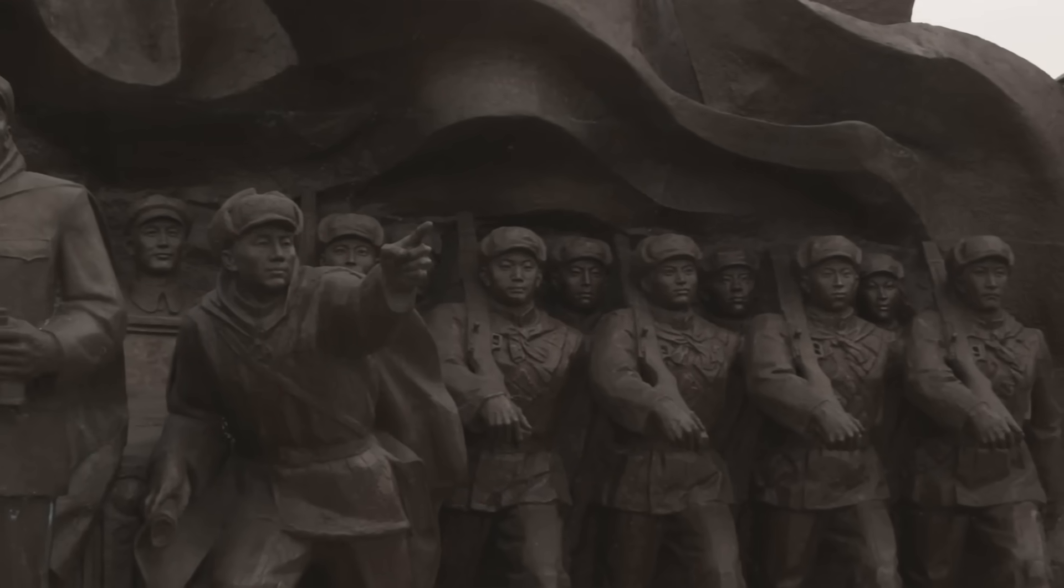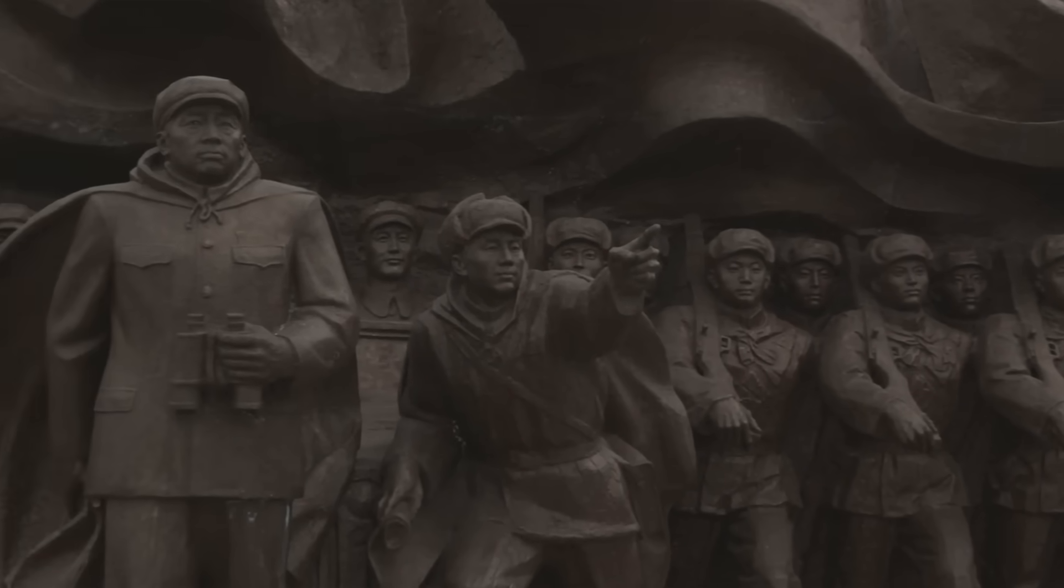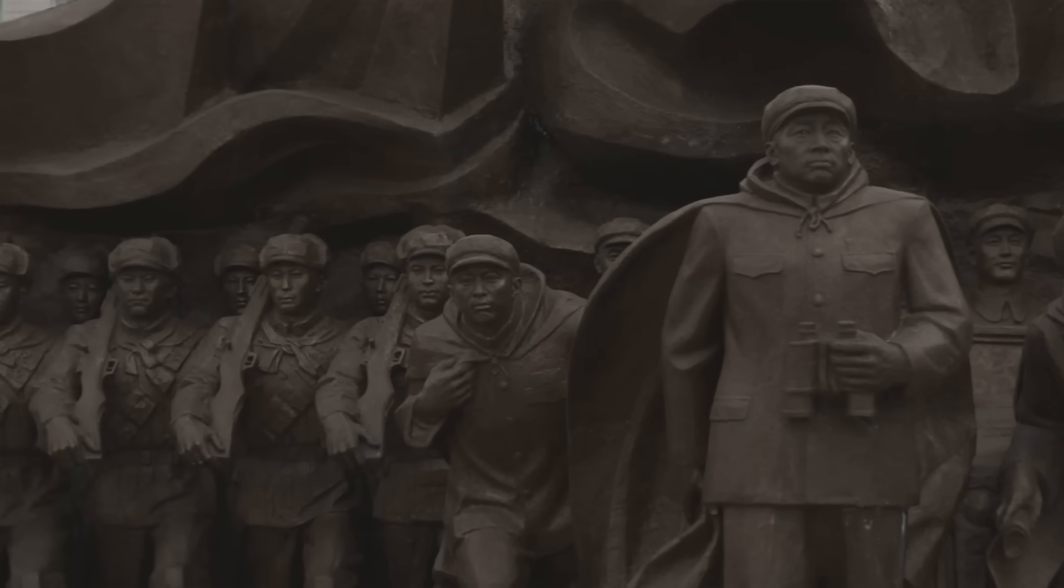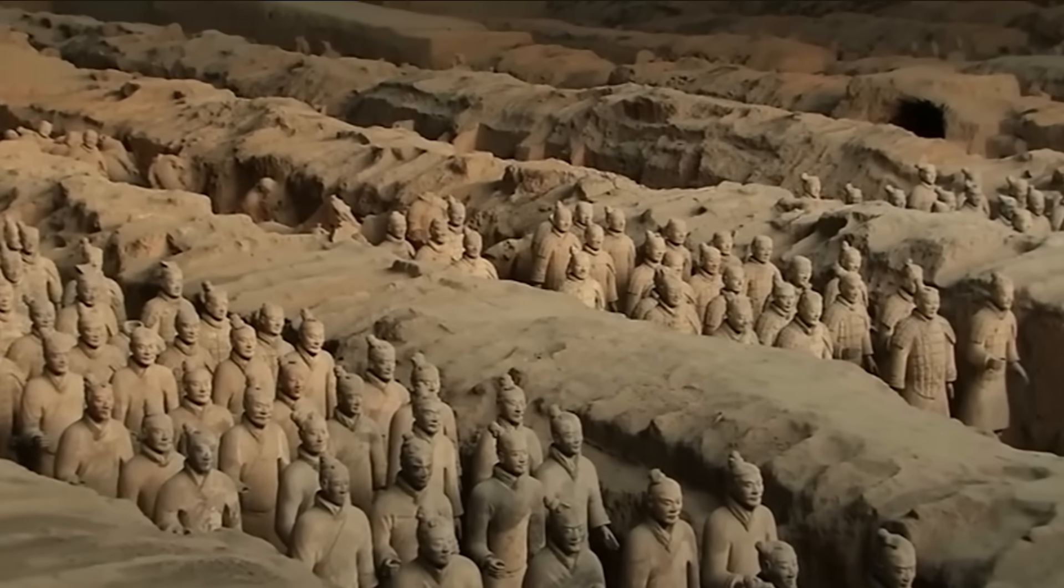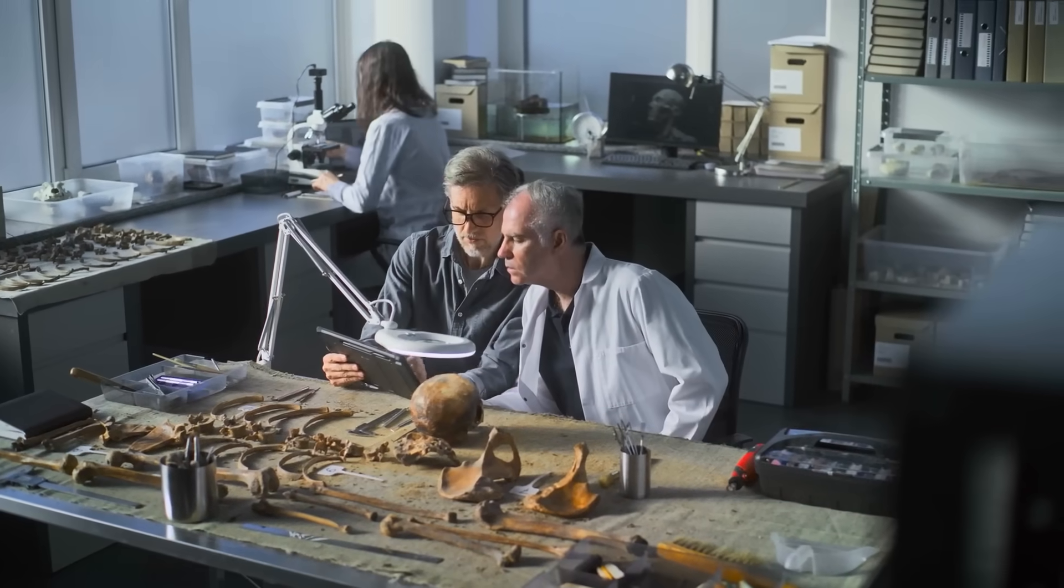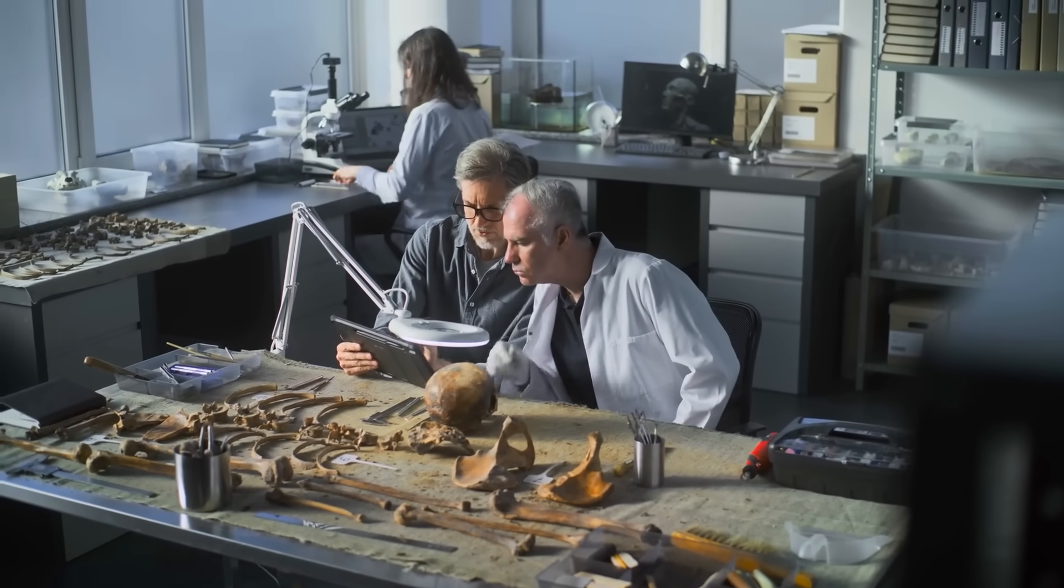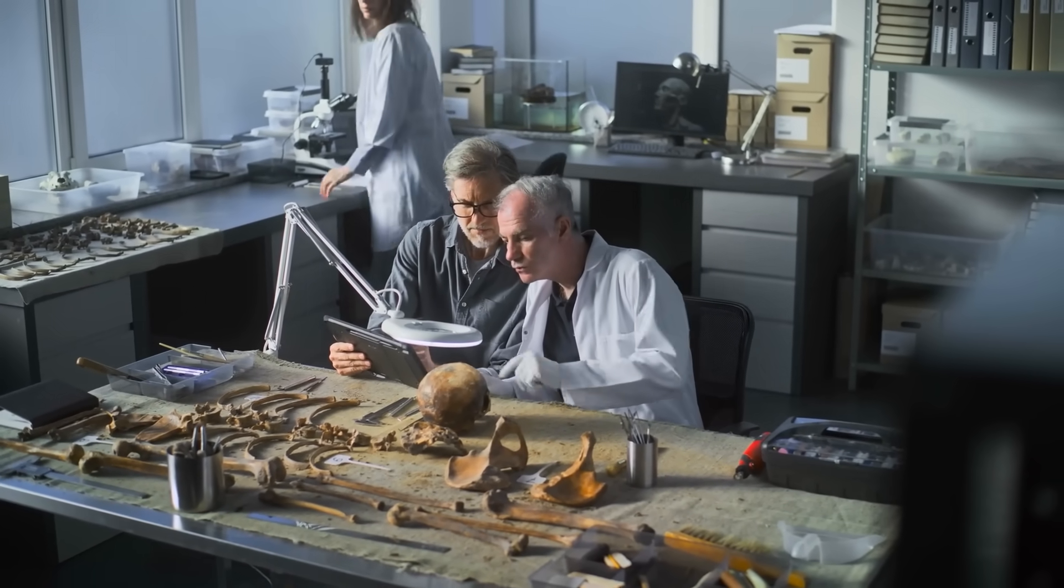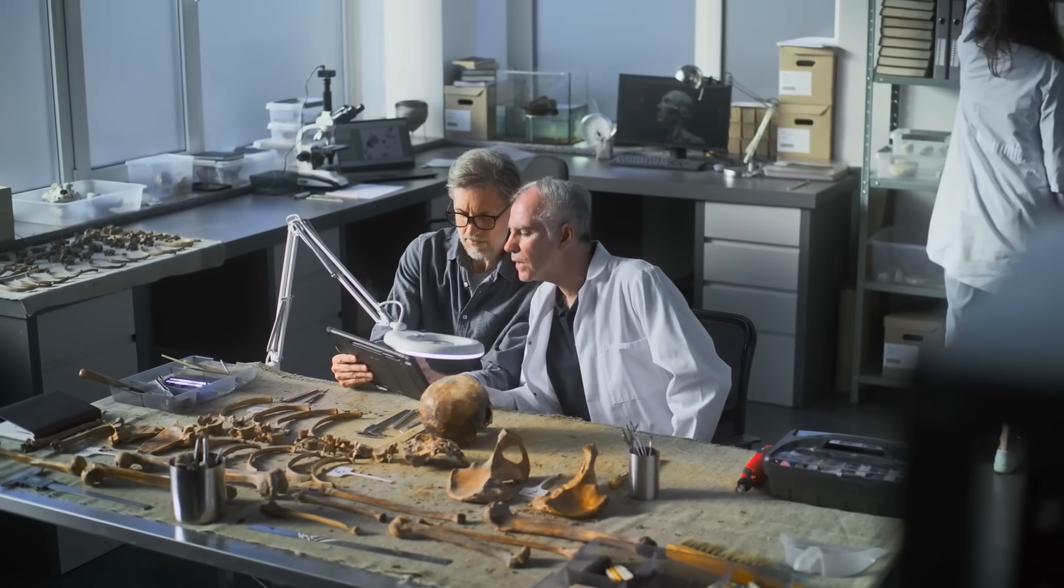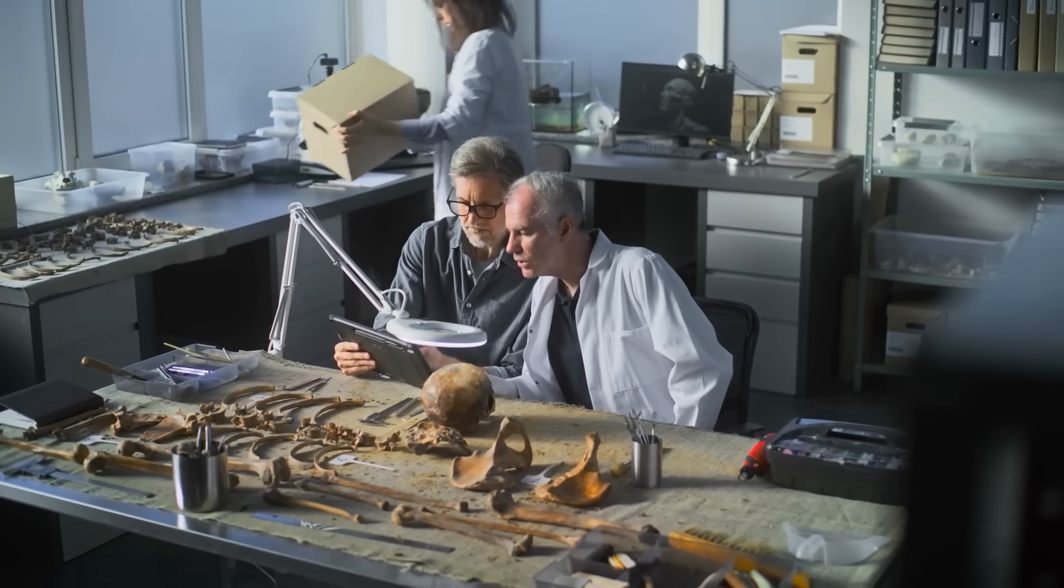The models detected subtle chemical signatures that revealed what the warriors once looked like in full, vibrant color before centuries of decay stripped them bare. They also spotted signs of possible underground structures still hidden near the tomb. Studies published in Scientific Reports and China Daily in 2024 confirmed these discoveries, giving historians their clearest picture yet of how these soldiers were crafted, painted, and preserved for millennia.